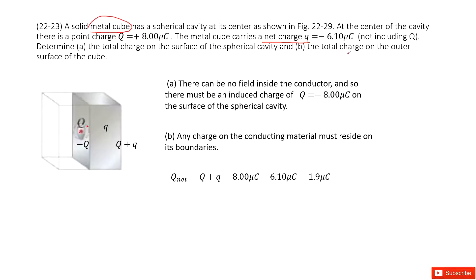The next one asks you the total charge on the outer surface. So on the outer surface, we can consider the outer surface is just equal to the charges for the net charge, right? Because any charge on the conducting materials must be located at its boundaries. The boundary is just the outer surface.